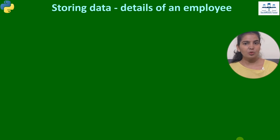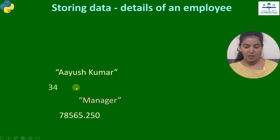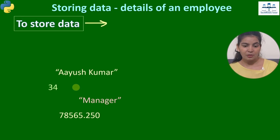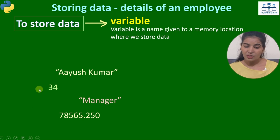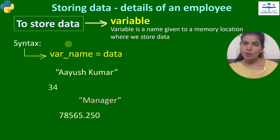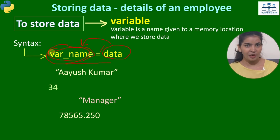Now let's say we have to create a program to store the details of an employee — name, age, designation, and salary. We have this data and we want to store it in memory so we can work on it further. To store data in memory we use variables. A variable is the name of a memory location where we store our data. To create a variable, we give it a name, use the equal-to sign, and then put the data we want to store.